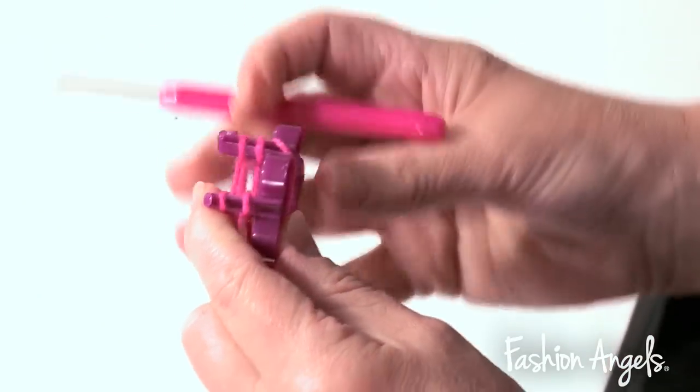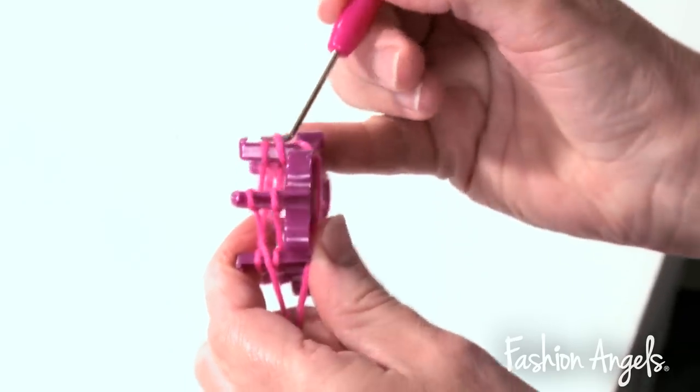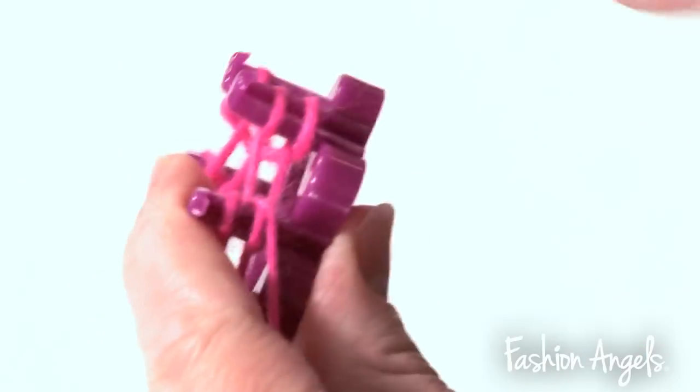Once you've gone around the loom two times, take your hook and take the first row of loops and pull it over the second.